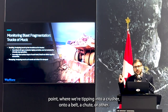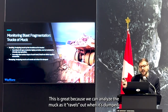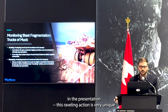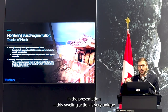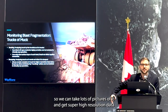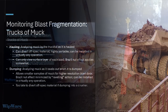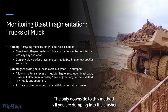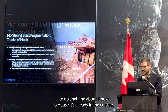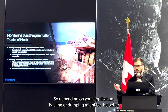And then there's the dumping points where we're tipping into a crusher onto a belt, a chute, whatever. This is great because we can analyze the muck as it ravels out when it's dumped. This raveling action is very unique to the way haul trucks tip — the material rolls out in kind of sheets or sections, so we can take lots of pictures and get super high resolution data from each truckload. The only downside is if you're dumping into the crusher and find out it's off spec, it's a little too late. So depending on your application, hauling or dumping might be the better point to do the analysis.